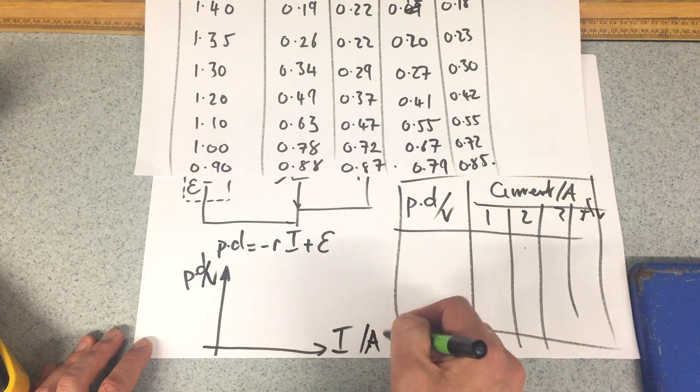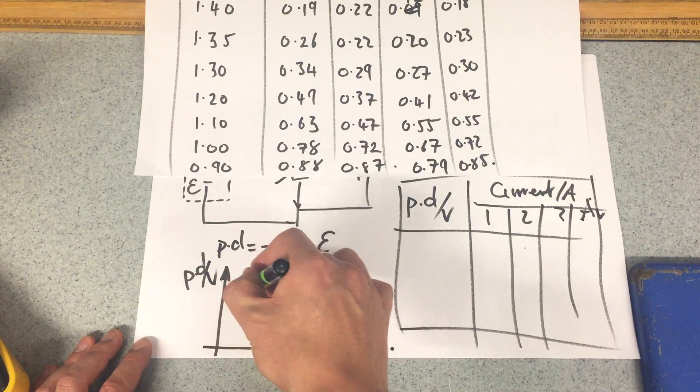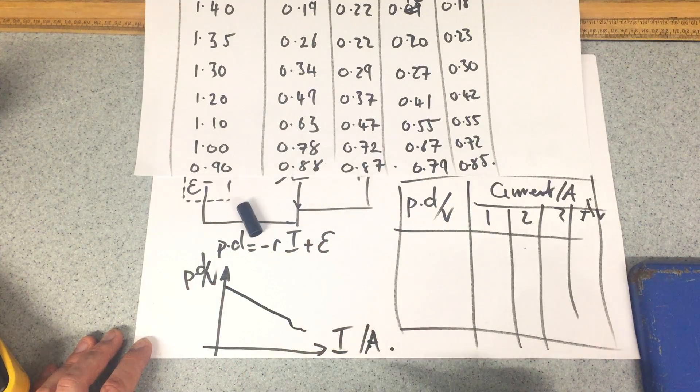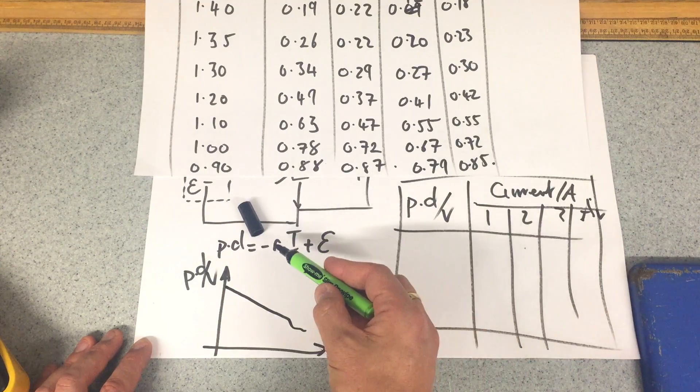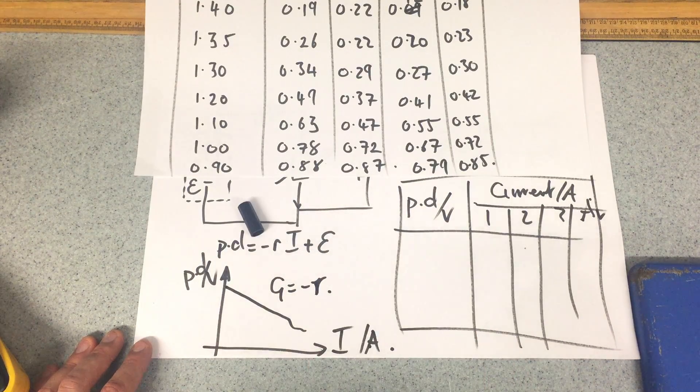then what we should get is something with a minus gradient, and my minus gradient is going to be equal to minus R. Okay, plot that and see if it makes sense.